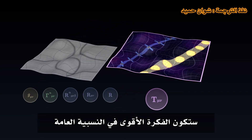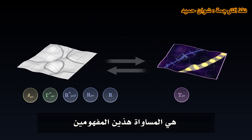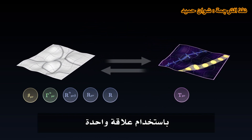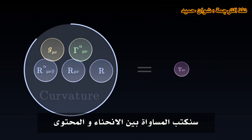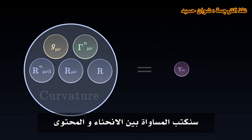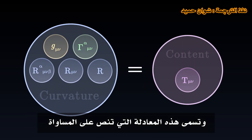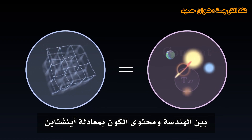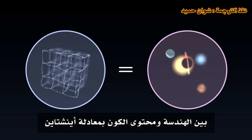The most powerful idea in general relativity will be to equate these two notions. Using a single relation, we will write an equality between curvature and content. This equation, which reads as an equality between the geometry and the content of the universe, is called the Einstein equation.